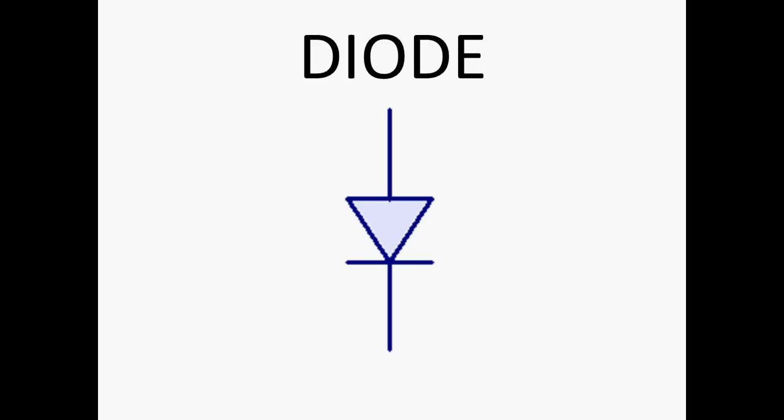That one is a diode. This is a one-way device, a one-way current device. Current can only flow in the direction of the drawn arrow, so from the top to the bottom or from the anode to the cathode.